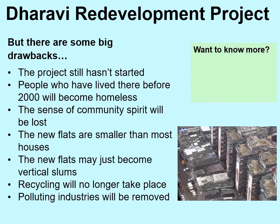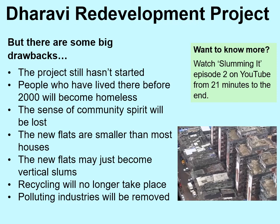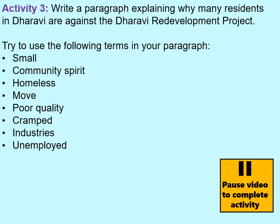If you want to find out more, you could watch 'Slumming It' — episode two on YouTube from about 21 minutes to the end — which takes you around one of these blocks of flats and shows the negative side of what might happen if the Dharavi Redevelopment Project goes ahead. Okay, activity three: pause the video and write a paragraph explaining why many residents in Dharavi are against the Dharavi Redevelopment Project. Try to use the following terms in your paragraph: small, community spirit, homeless, move, poor quality, cramped, industries and unemployed. Remember, if you need to, you can rewind the video and listen to the last section again.